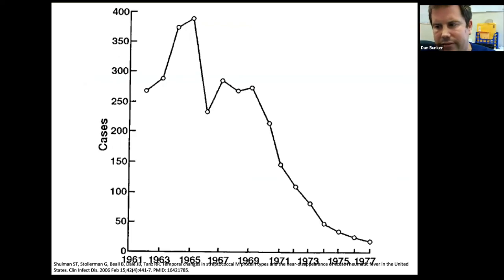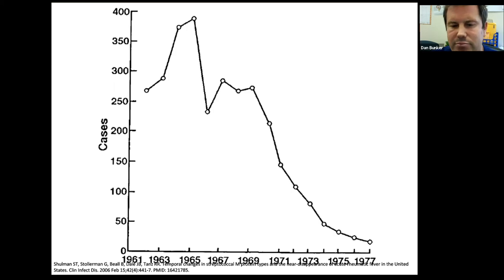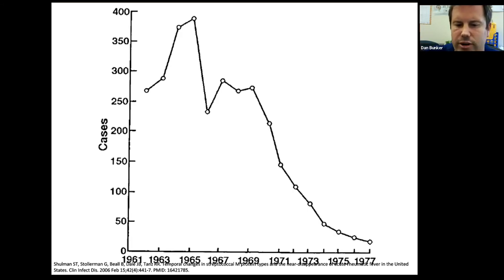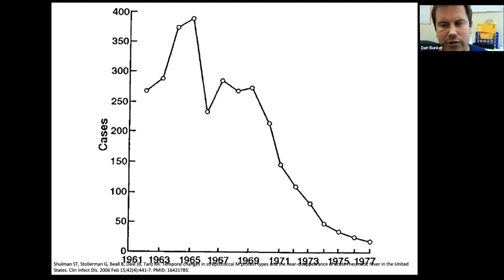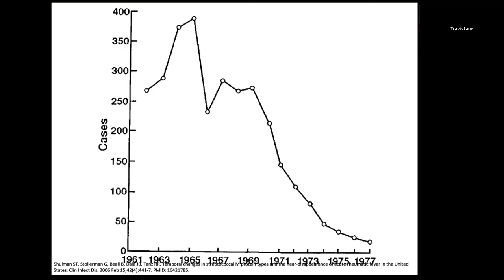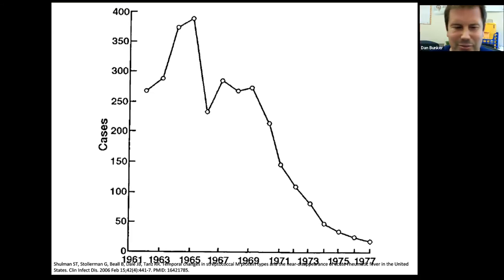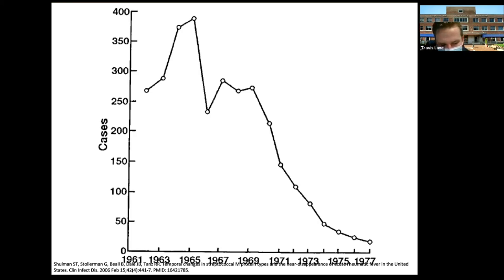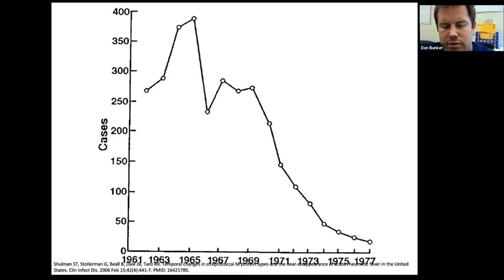The incidence of rheumatic fever has declined dramatically — likely not just due to antibiotics, but also changes in underlying strep strains making them less arthritogenic. It's very uncommon for people born in the U.S., but it remains a major cause of valvular heart disease around the world. Something like 200,000 people die every year of rheumatic heart disease. It's a very unfortunate global problem.